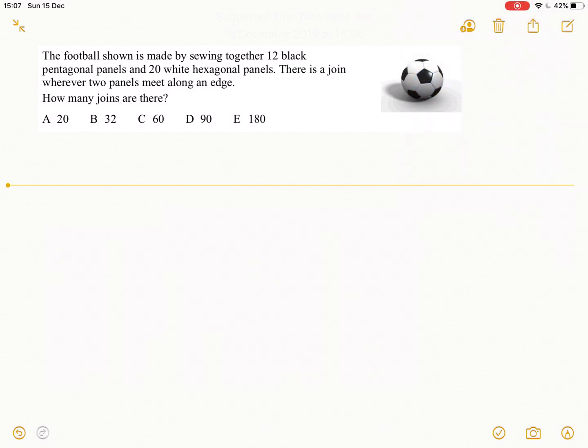So this is the question. A football is made by sewing together 12 black pentagonal panels and 20 white hexagonal panels. There is a join wherever two panels meet along an edge. How many joins are there?